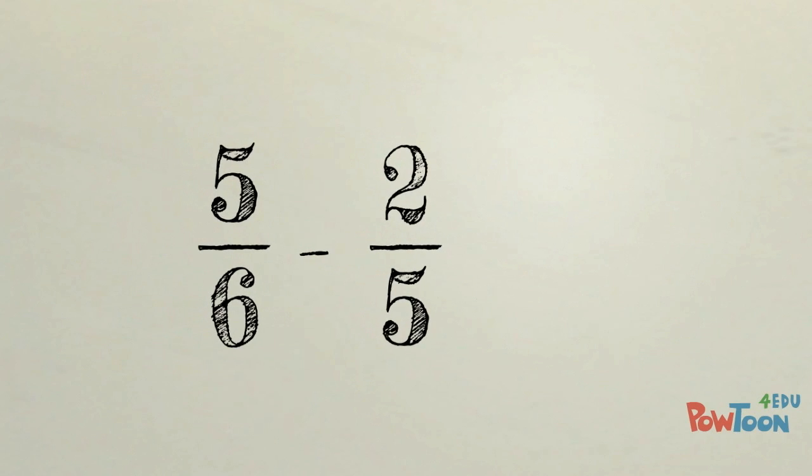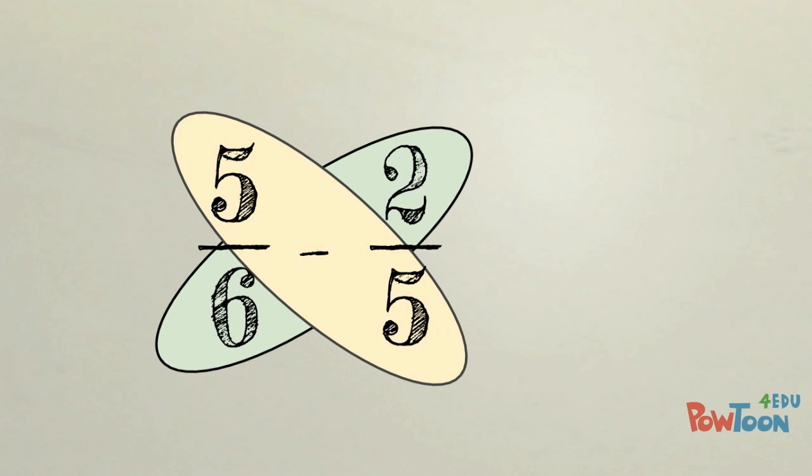It works the same for a subtraction problem. 5 sixths minus 2 fifths. We're going to do the same grouping, 6 and 2, and 5 and 5.